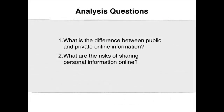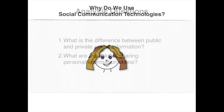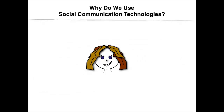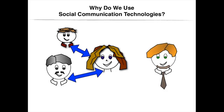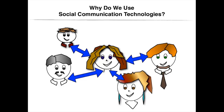The analysis questions for this video clip are: What is the difference between public and private online information? And what are the risks of sharing personal information online? Users of digital communication technologies are drawn towards social networking sites to find a lost childhood best friend, a college roommate, a past employee, and more. Once they find them, they try to revive an old relationship or build one they wished they had built in the past. Users are also eager to build new connections and benefit from the interactions that emerge.